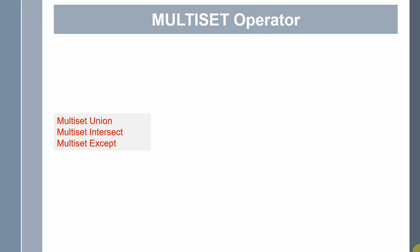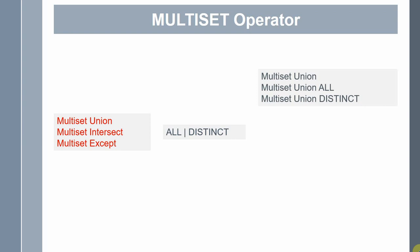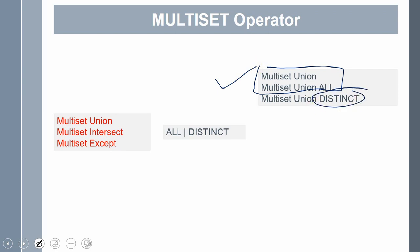Multiset except is very similar to the minus operator. Optionally, we can use two more keywords along with this: ALL or DISTINCT. Even if you are not specifying ALL, the default behavior is ALL only. So you can say multiset union, multiset union all, or multiset union distinct. The behavior of multiset union and multiset union all will be the same — it combines the elements of two collections and returns the result without removing any duplicates. If you want to remove duplicate elements in the result, you can use the DISTINCT keyword.